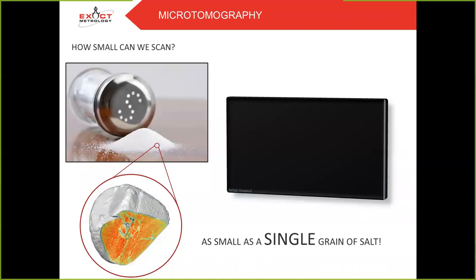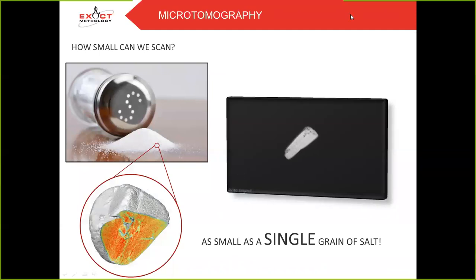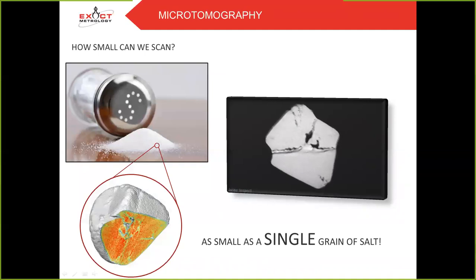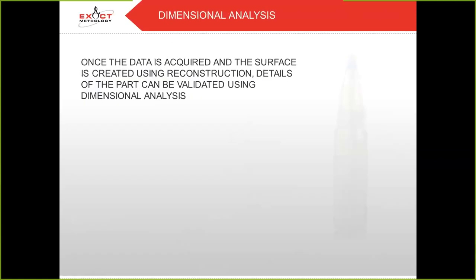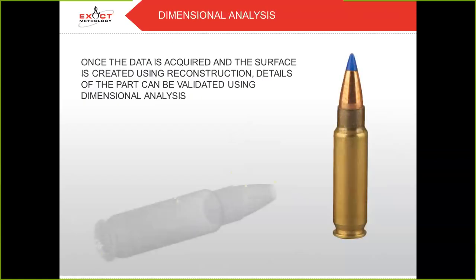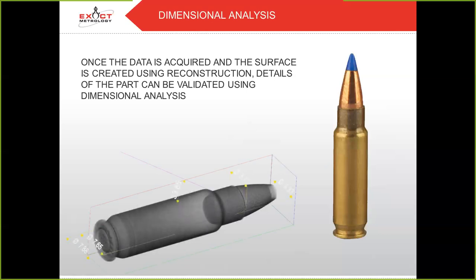Microtomography — how small can we scan? Actually, fairly small. In this case, we scanned a grain of salt pulled from the kitchen and found that it has 5% porosity. On to dimensional analysis: once the data is acquired and the surface is created using reconstruction, details of the part can be validated using dimensional analysis. In this case, you could also go in and count each grain of gunpowder if you so choose.